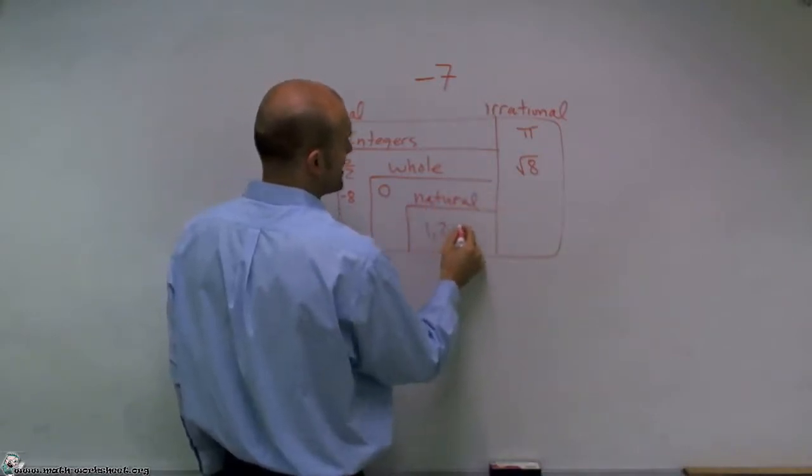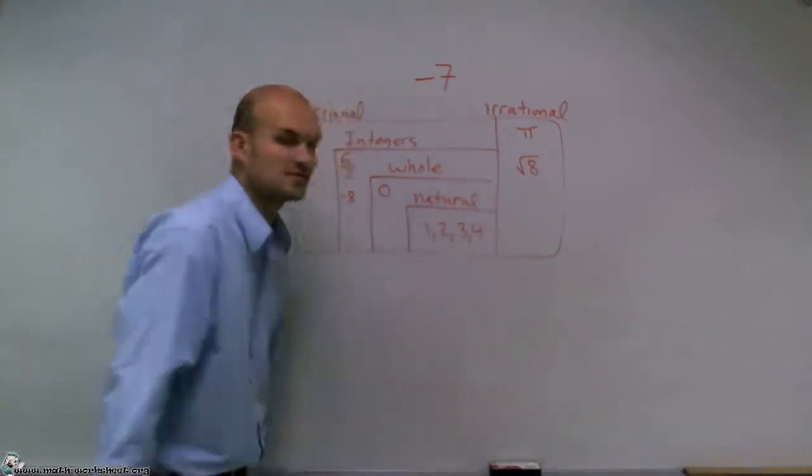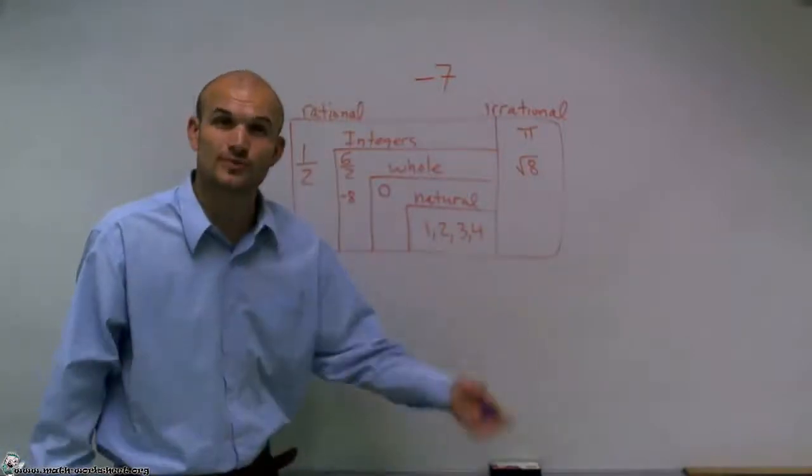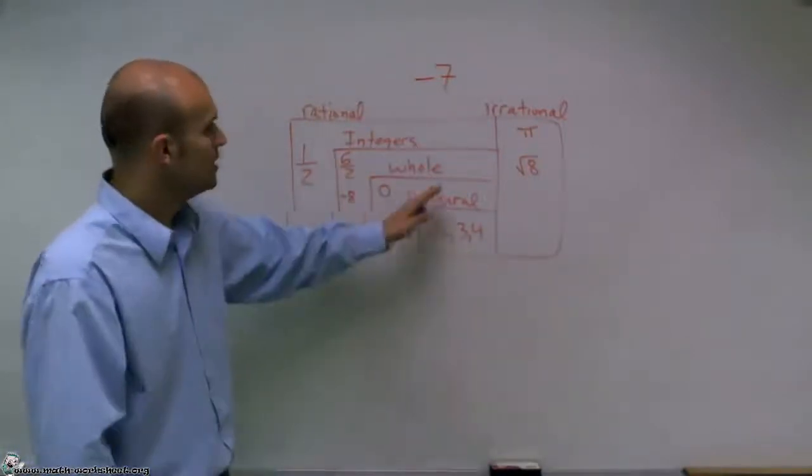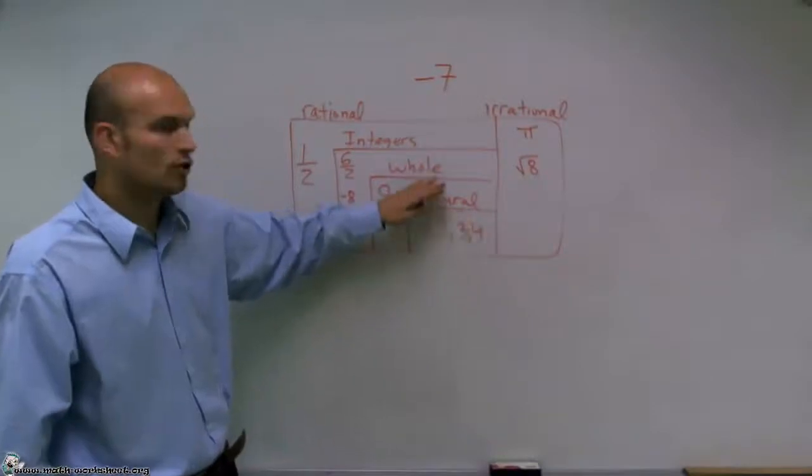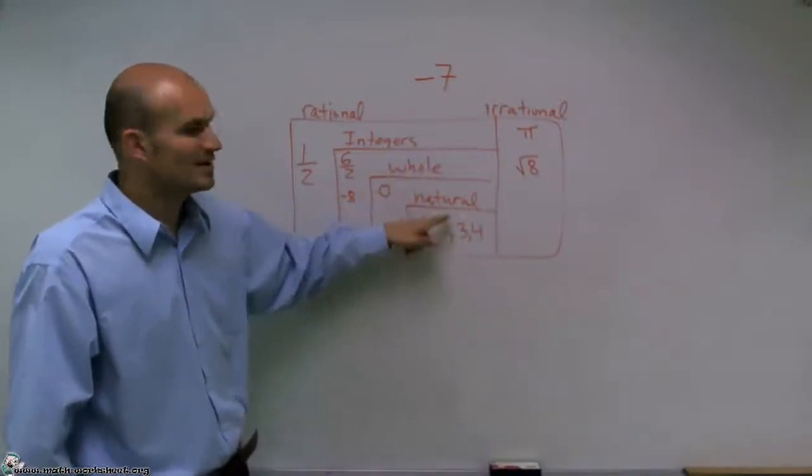And those are your numbers that everybody is most familiar with. So it's like 1, 2, 3, 4, 5, 6, 7, 8. Well, natural numbers are whole numbers. But you've got to notice that 0 is not a natural number.